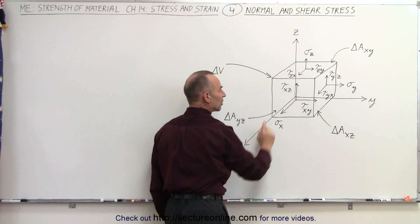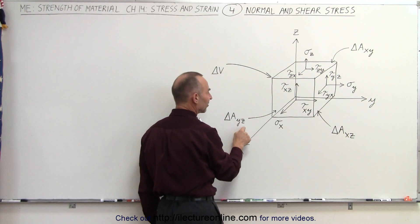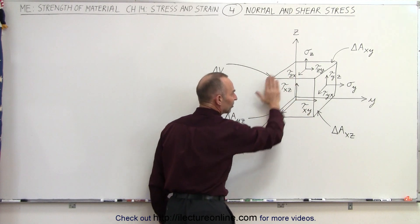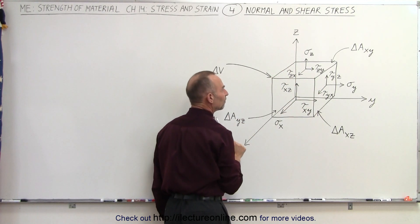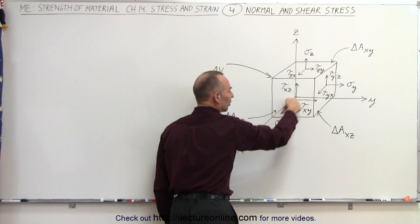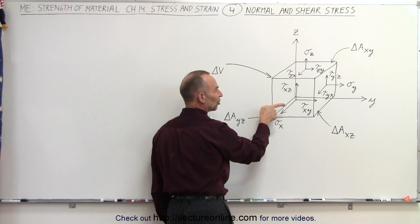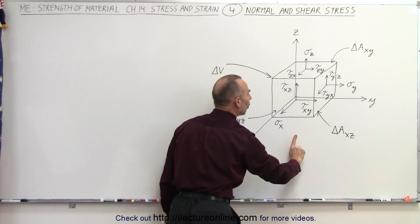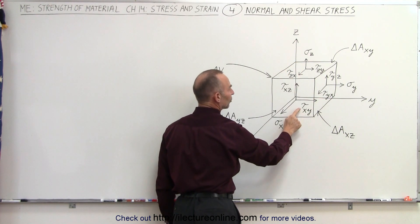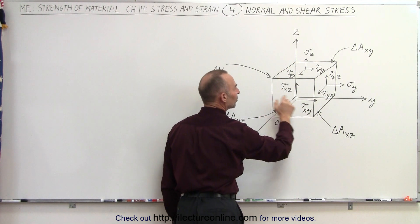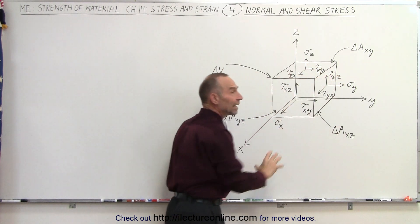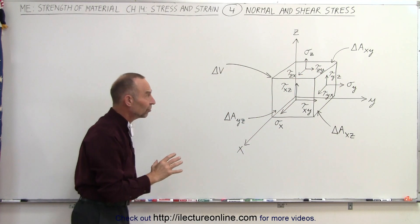And then the front surface right here, which is the plane, the yz plane, because that is in the yz direction right here in the yz plane, we have the normal stress perpendicular to the surface called sigma sub x. And then we have the two shear stresses, one in the y direction, one in the z direction. So those are called tau xy and tau xz.